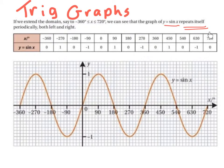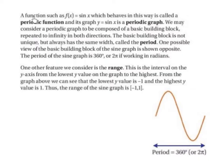So these are our x values and these are our y values. Notice that the graph y equals sine of x never goes above 1 and never goes below minus 1. A function such as f of x equals sine of x, which behaves in this way, is called a periodic function. And its graph, y equals sine of x, is a periodic graph.